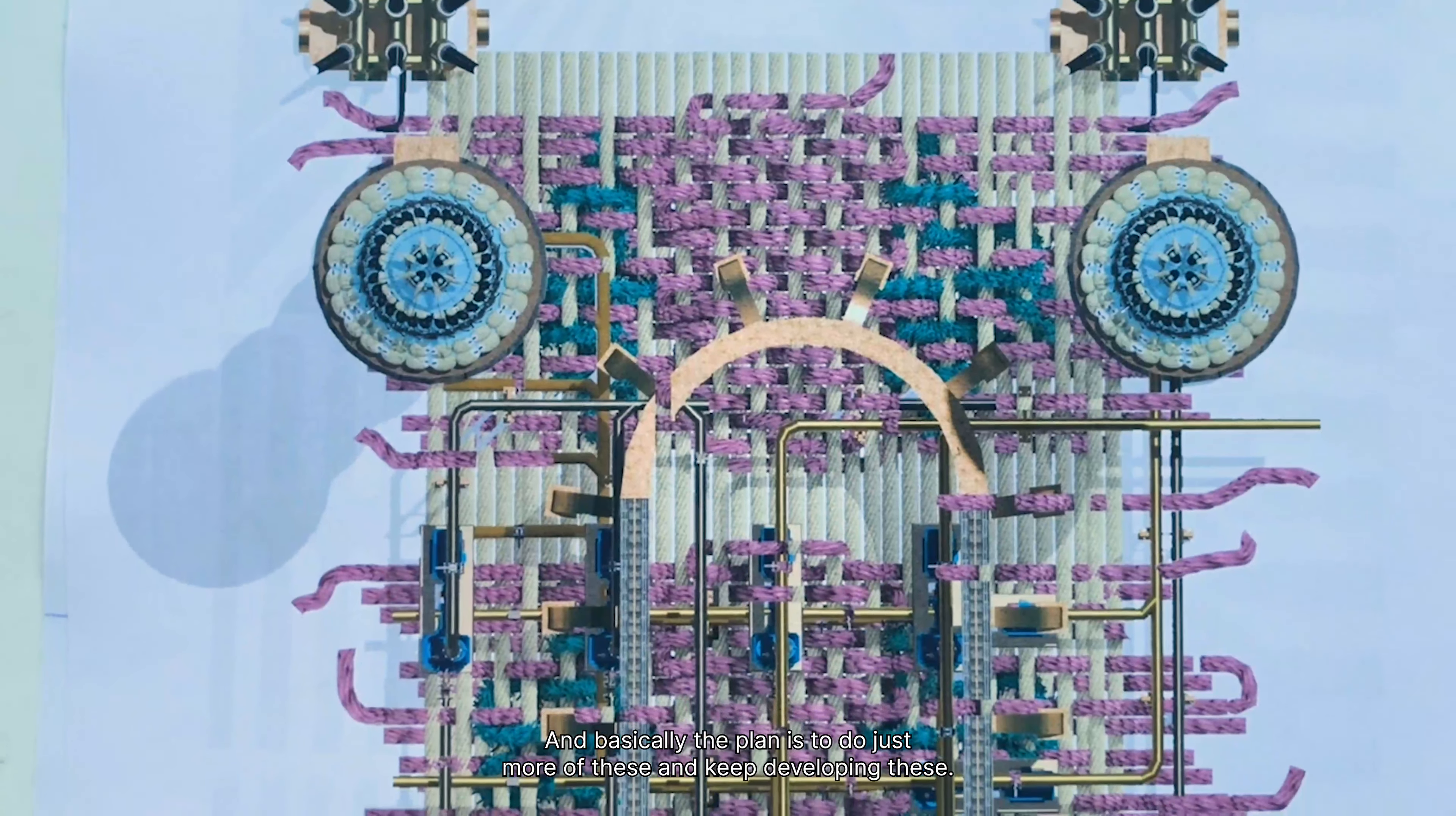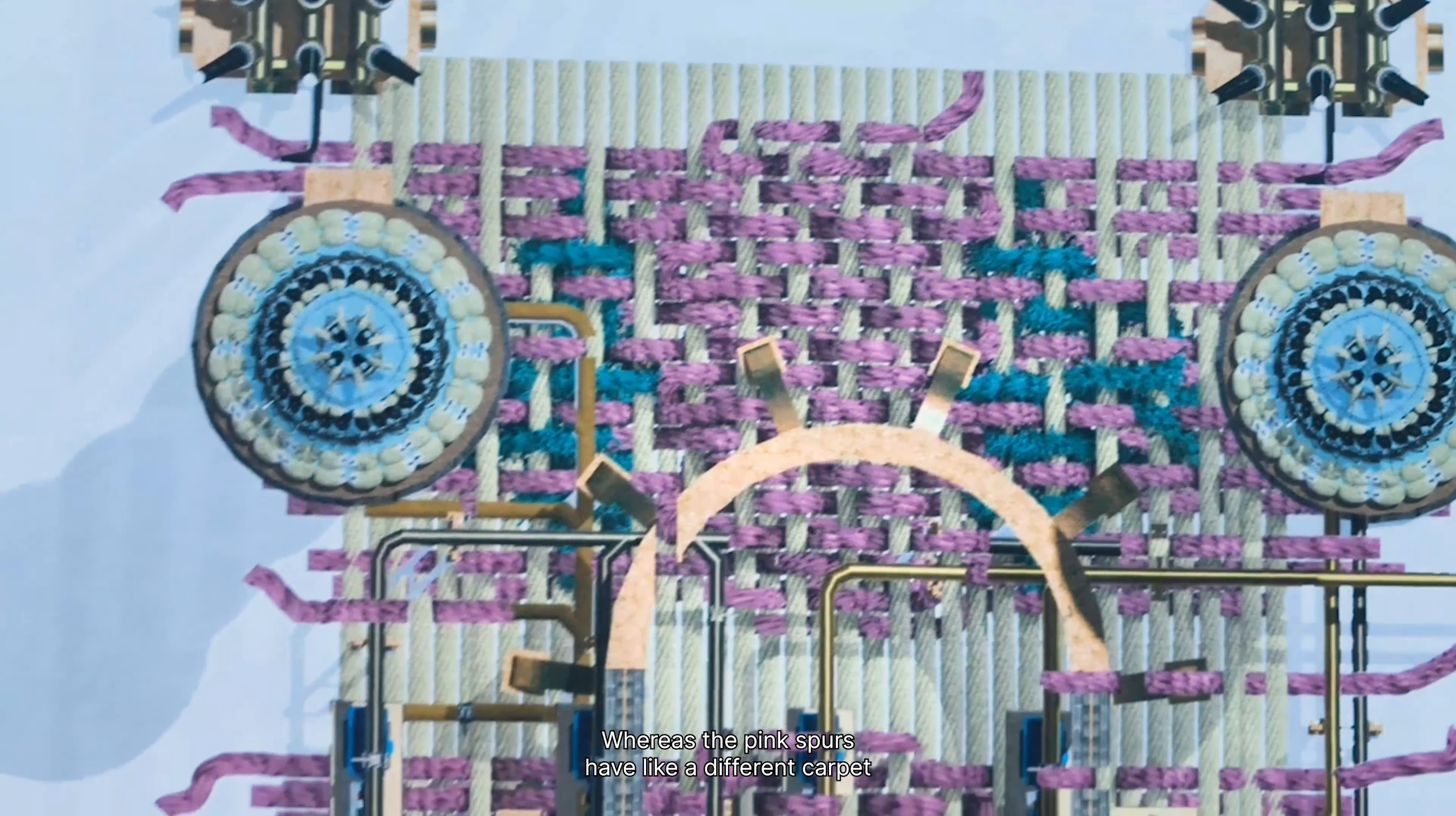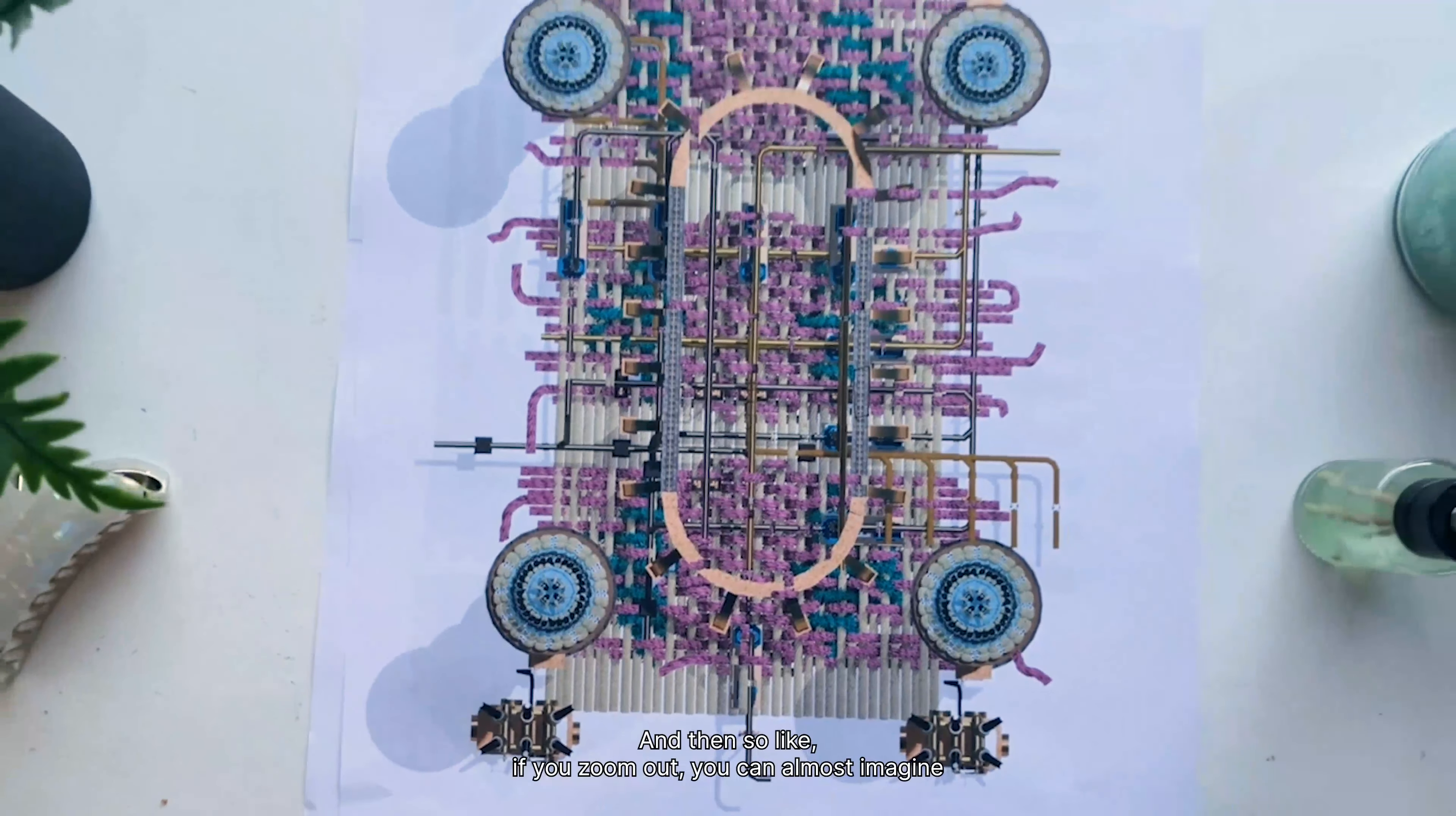And basically the plan is to do just more of these and keep developing these. I've also started to test out the textures. So you have those blue threads which are almost furry and they're just from a fur material, whereas the pink threads have a different carpet-like texture applied onto them. And I've basically photoshopped these two together to show that they're one thing and they're woven together.